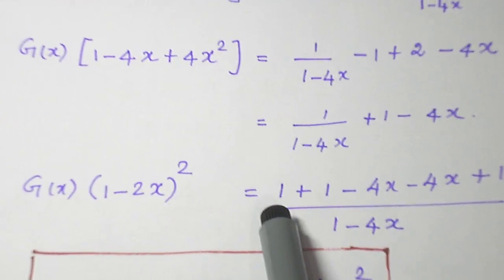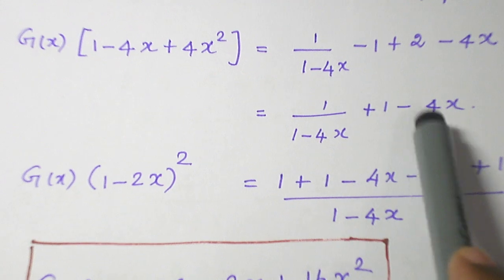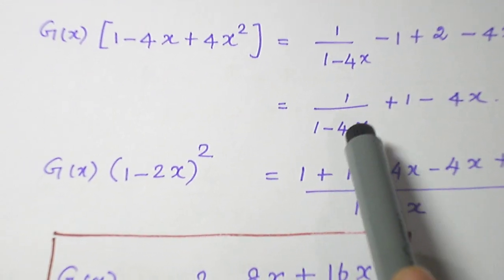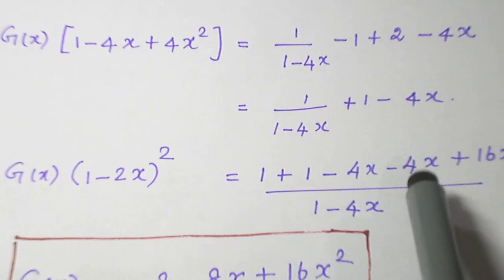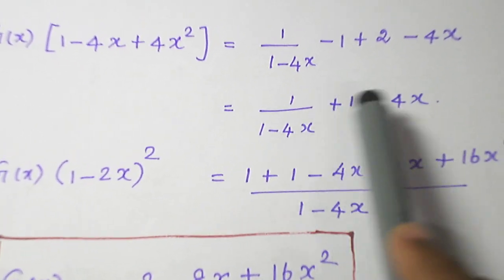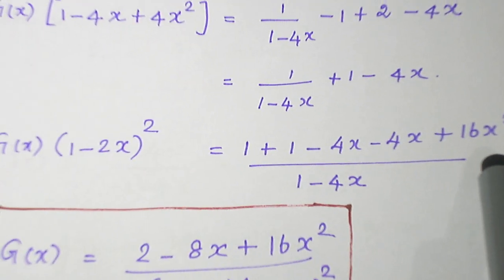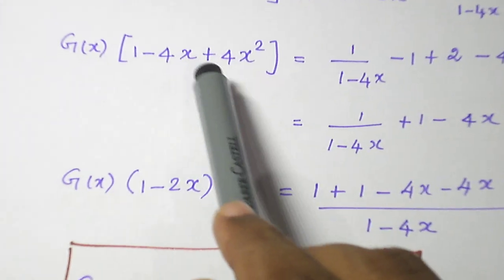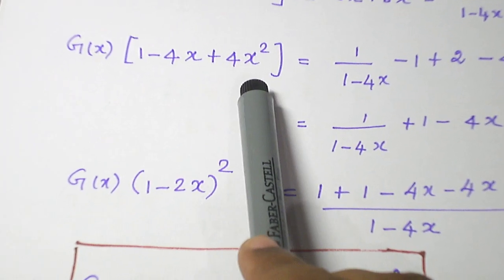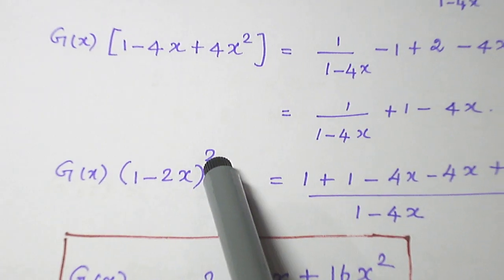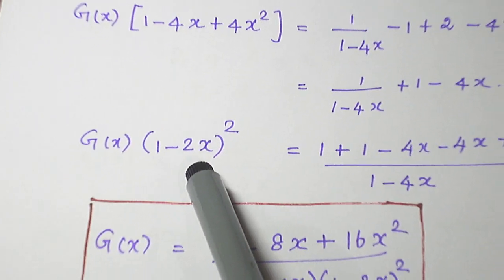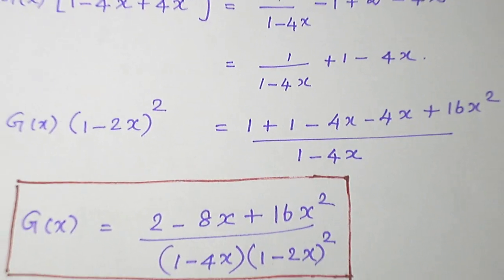So, 1 will come as it is. Now, multiply these 2. 1 into 1, 1. Minus 4x into 1 minus 4x. Minus 4x into 1 minus 4x. Minus 4x into minus 4x plus 16x^2. And factorize this 1 - 4x + 4x^2 as (1-2x)^2. You know the factorization I think. And bring it to the right hand side.